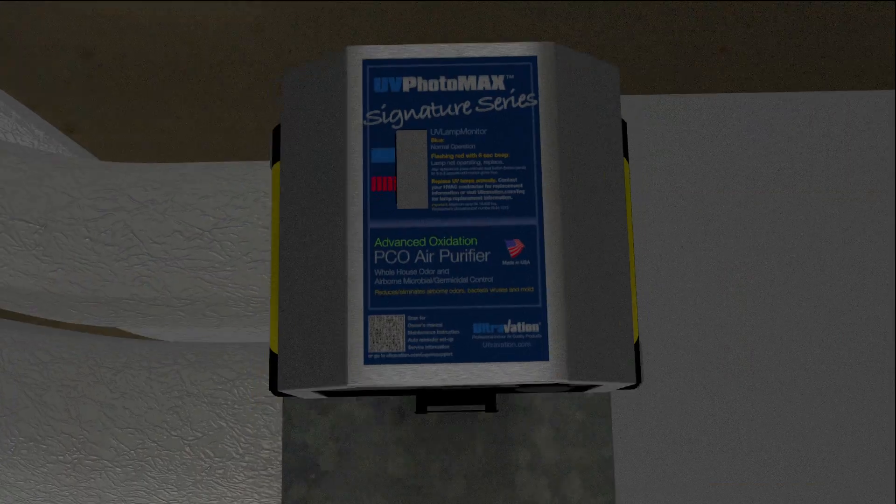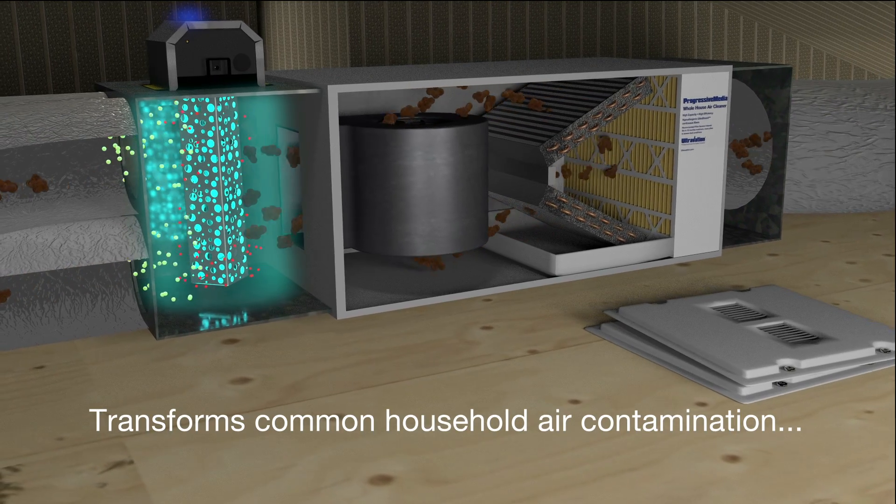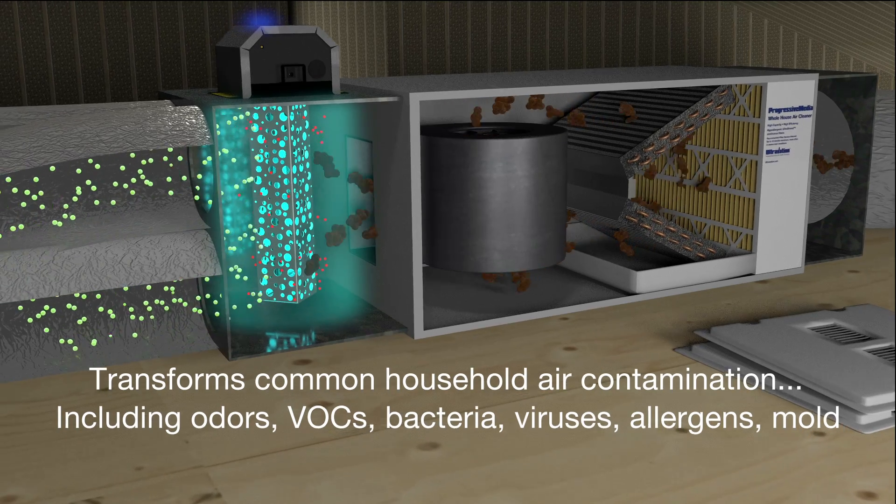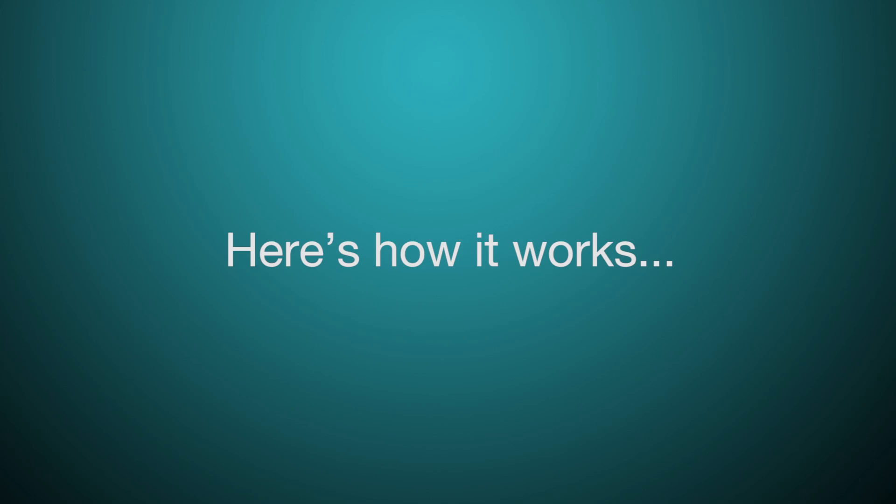UV Photomax installed in HVAC air ducts actively breaks down household odors while killing airborne bacteria, viruses, allergens and microscopic mold. Here's how it works.